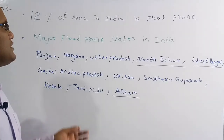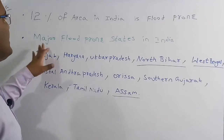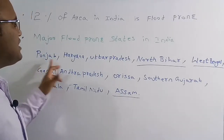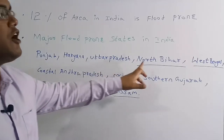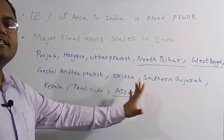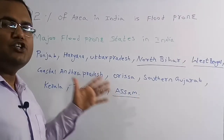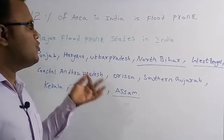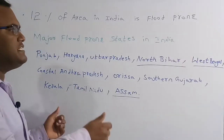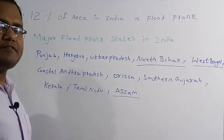Now we will discuss which states are majorly flood-prone states in India. The major flood-prone states are Punjab, Haryana, Uttar Pradesh, North Bihar, West Bengal, Coastal Andhra Pradesh, Orissa, Southern Gujarat, Kerala, Tamil Nadu, and Assam. These are the major states which experience flood-prone effects every year.